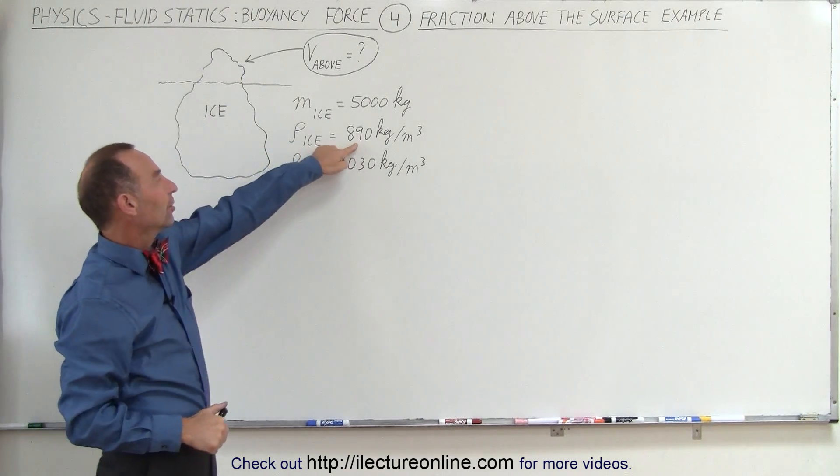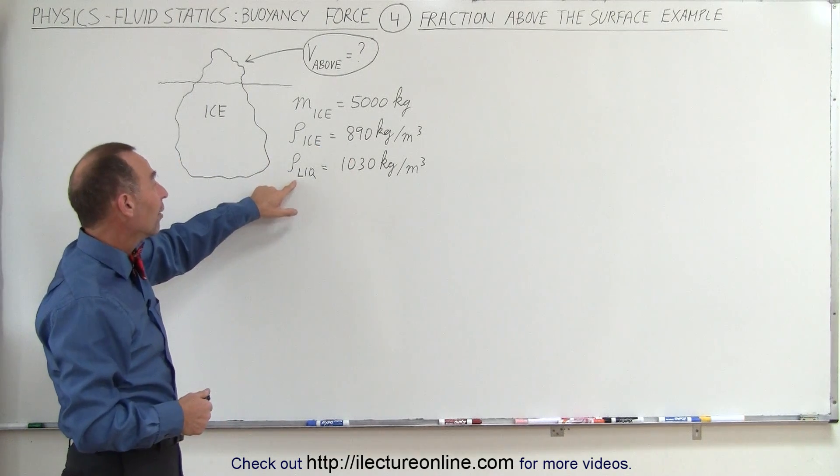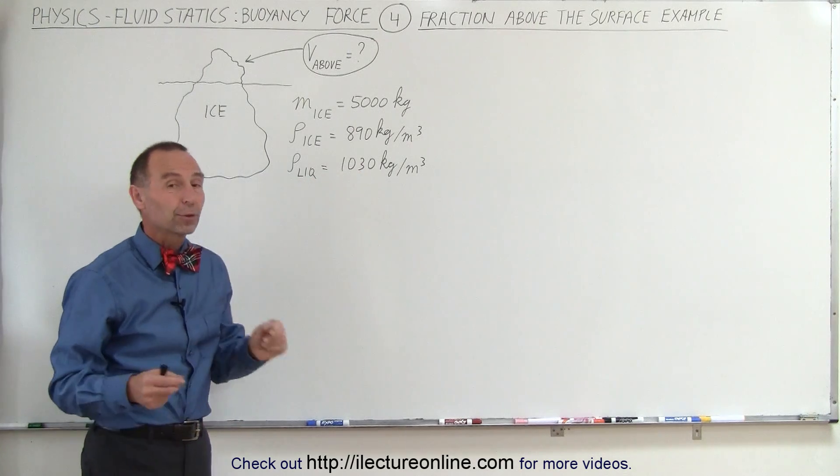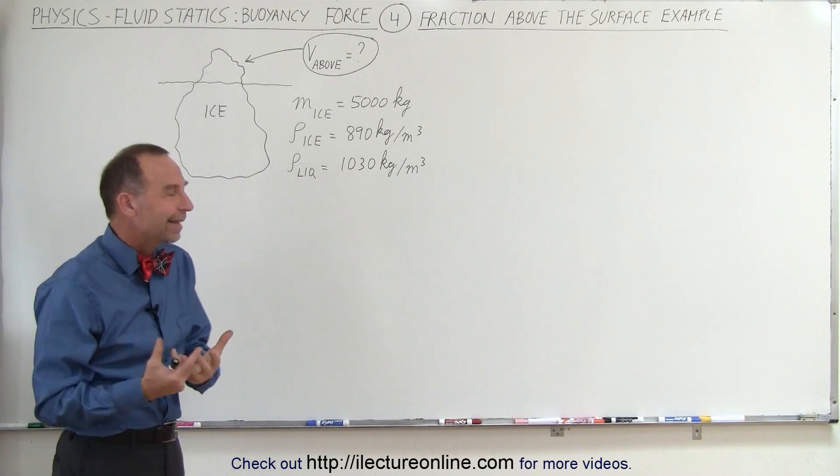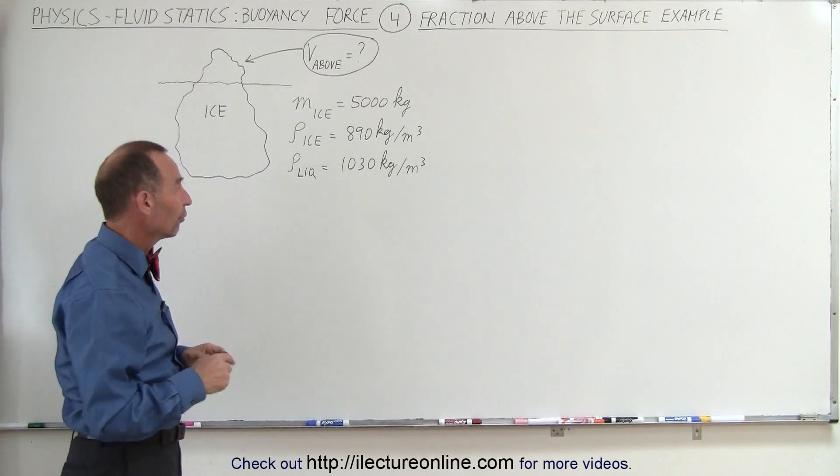The density of the ice is 890 kg per cubic meter, and the density of the ocean water is about 1,030 kg per cubic meter, which is a little bit more dense than freshwater or lake water because it contains minerals and salts.